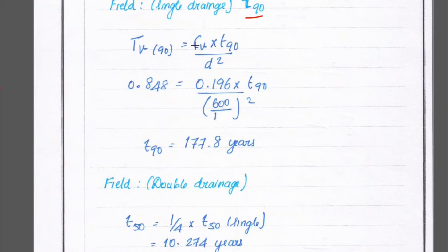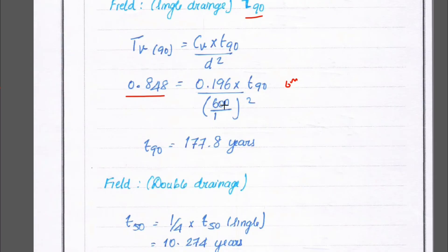For 90 percent consolidation, TV₉₀ = 0.848, derived from π/4 × (90/100)². Substituting: 0.848 = 0.196 × T₉₀ / (600)², where 6 meters equals 600 centimeters. Solving this, we get T₉₀ = 177.8 years for 90 percent consolidation under single drainage field conditions.